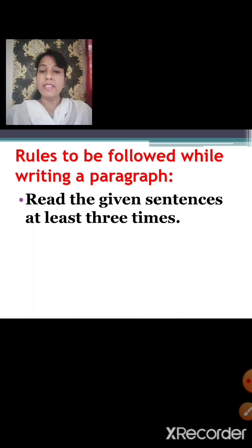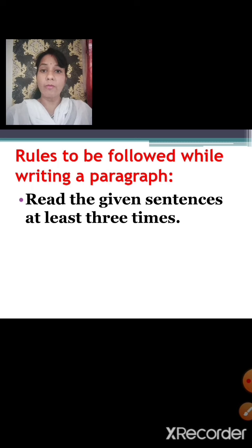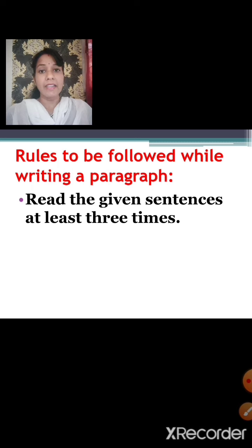Rule one: Read the given sentences at least three times. In grade 3, you will be given sentences in the form of points. All the sentences will be jumbled. You have to read the given sentences at least three times and understand them. Don't be in a hurry. Take your own time and read all the sentences carefully and understand them properly.